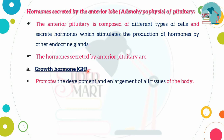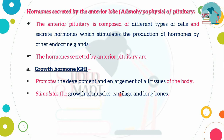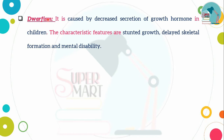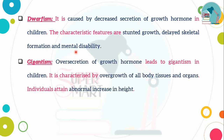The growth hormone stimulates development and enlargement of muscles and long bones. It stimulates growth and controls cell metabolism. If the growth hormone is not properly secreted, defects occur. Dwarfism occurs when children's growth hormone is decreased, causing reduced growth, poor skeletal formation, and mental disability. Gigantism occurs when there is oversecretion of growth hormone in children, causing tissue and organ overgrowth and abnormal height increase.